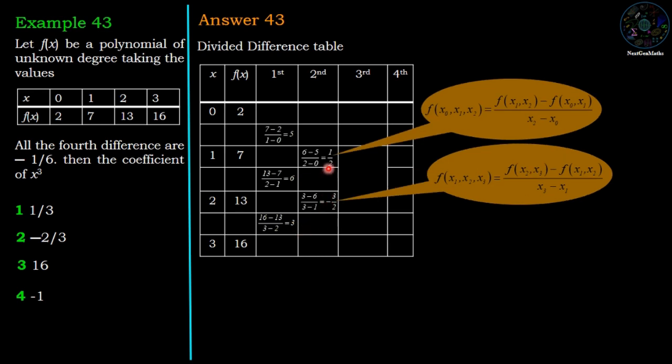Now second order difference is defined as f(x₀, x₁, x₂) equals f(x₁, x₂) minus f(x₀, x₁) divided by x₂ minus x₀. So it is 6 minus 5 divided by 2 minus 0, which has value 1 by 2. And the second difference is 3 minus 6 divided by 3 minus 1, which has value 3 by 2.